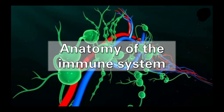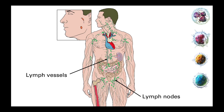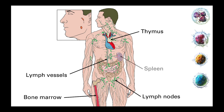So far in this series of videos we have mainly been looking at the innate immune response. Before we dive into the adaptive response, it will be helpful to understand a bit more about the anatomy of the immune system. The body has a parallel system called the lymphatic system, which not only includes the lymph vessels and lymph nodes but also the primary and secondary immune organs and tissues such as the thymus, bone marrow, spleen, and mucosa-associated lymphoid tissues such as the tonsils and adenoids.